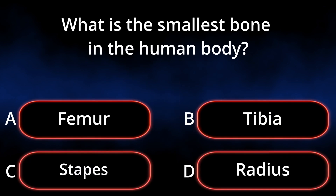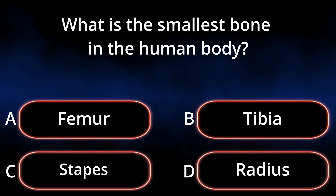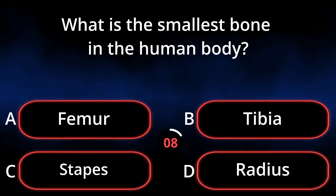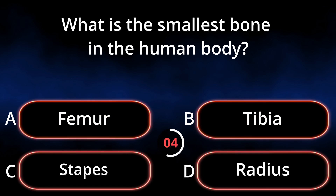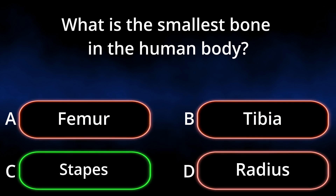What is the smallest bone in the human body? A. Femur. B. Tibia. C. Stapes. D. Radius. Answer: Stapes.